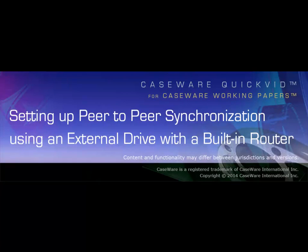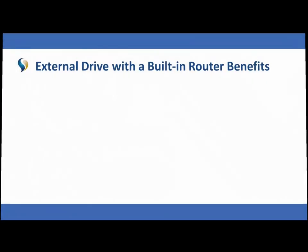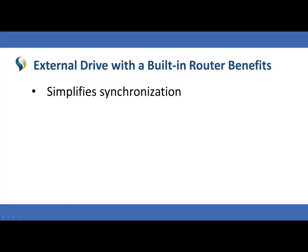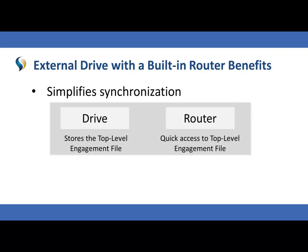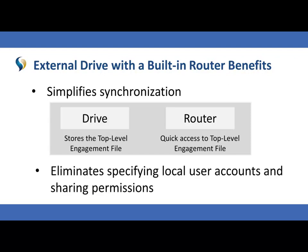Welcome to Caseware QuickVids. This video demonstrates how to set up and work with peer-to-peer synchronization in Working Papers with SmartSync when using an external drive with a built-in router. Using this method simplifies the process for both the parent and connecting peers. The drive component allows for convenient storing of the top-level engagement file, while the router offers a simple way for peers to access it. As a result, this is now a recommended best practice for those working in Working Papers with SmartSync.